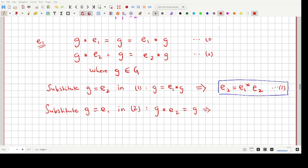That will give us E1 star E2 is equal to E1, and let's say that this is equation number 4. We'll just put a box around it. I guess it is now very obvious that